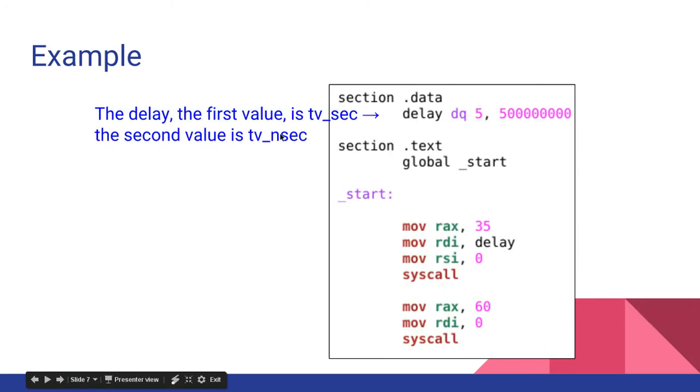So, the first value here is tvsec and the second value is tvnsec. So, what we've done, in our data section, we've done a delay and we've done define keyword.